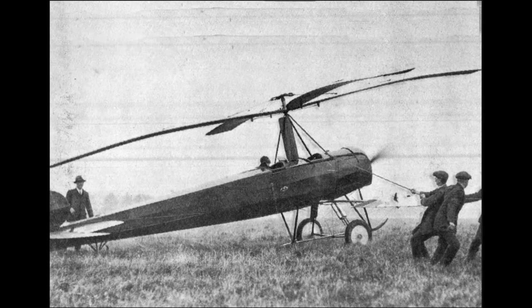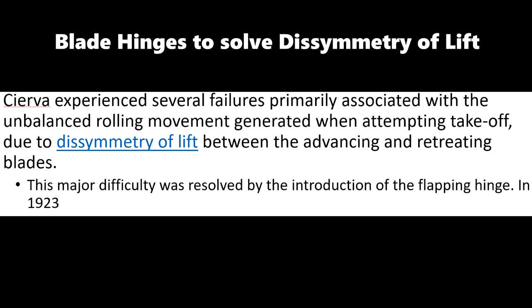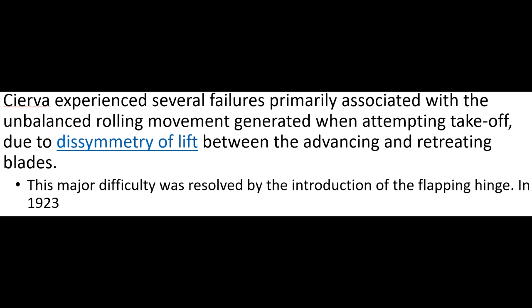It turns out the original design was flawed because it used a rigid rotor. The blade moving forward experienced higher relative wind than the blade moving rearward. The forward-moving blade is called the advancing blade, while the rearward-moving blade is called the retreating blade. When the gyroplane started moving, the relative wind difference caused a dissymmetry of lift, which was responsible for rolling the gyroplane over. Cierva eventually figured out the problem and added flapping hinges for the blades, allowing the advancing blade to rise and the retreating blade to descend, compensating for the difference in lift.